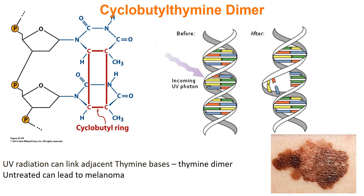One especially relevant type of damage in Texas is cyclobutyl thymine dimers, or TT dimers. When two thymines are adjacent in the same DNA strand and UV radiation comes in, the two thymines form a cyclobutyl ring with each other. This distorts the DNA because the thymines are no longer hydrogen bonding — they're covalently bound to each other. If these aren't repaired, that's how you get melanoma. This is why it's important to wear sunscreen.